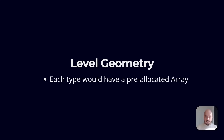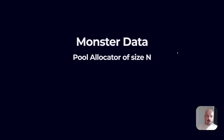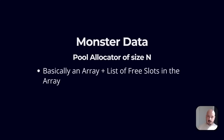Let's look at another example: monster data. Zero to N number of monsters on each map or level — that number is known by the developers. A lot of programmers have a lot more information than people would think based on the way we program or teach sometimes. As the developer we know what this N is, we can use that as the limit. So we can make a pool allocator.